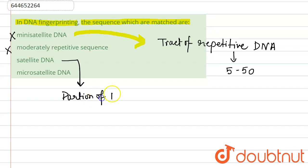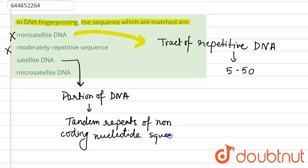It consists of tandem repeats of non-coding nucleotide sequence, and where it is present: it is present in the genome. And this satellite DNA we can use for DNA fingerprinting for the sequences which are matched.